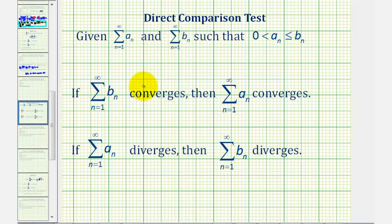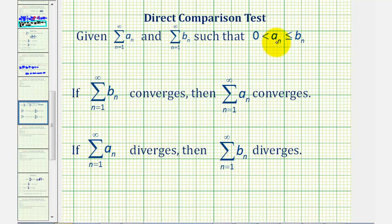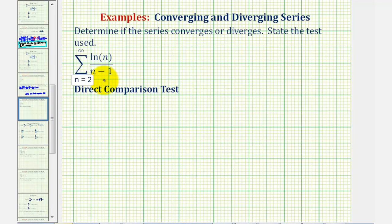So if we're comparing to a converging series, we want b sub n to come from the converging series, and if we're comparing to a diverging series, we want a sub n to be the diverging series. Going back to our example, we have to select a series that we know converges or diverges. In this case, we'll compare it to the sum of one divided by n, which we know diverges from the p-series test.